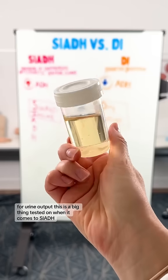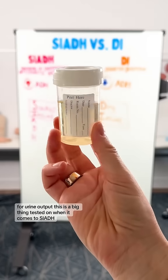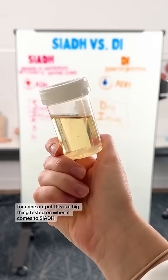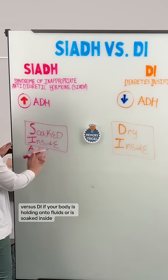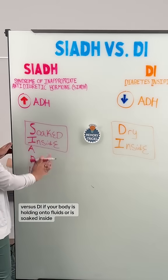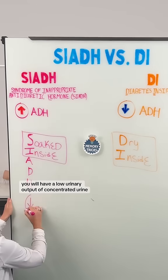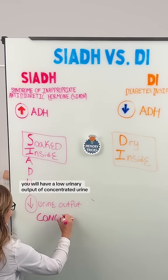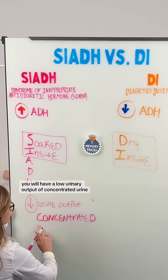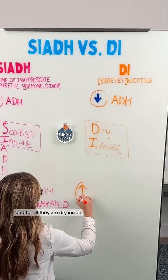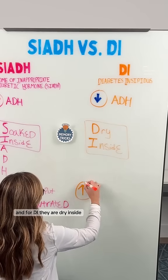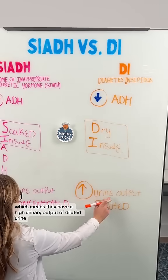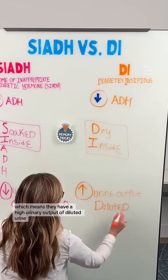Now for urine output — this is a big thing tested on when it comes to SIADH versus DI. If your body is holding on to fluids or is soaked inside, you will have a low urinary output of concentrated urine. And for DI, they are dry inside, which means they have a high urinary output of diluted urine.